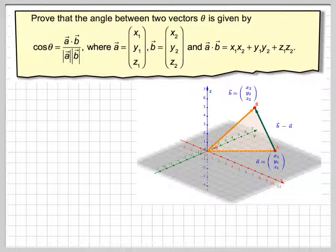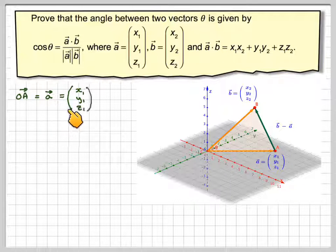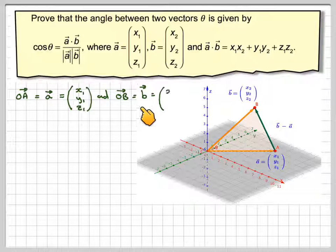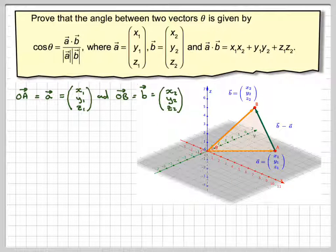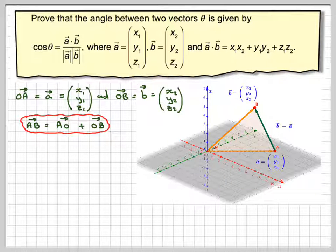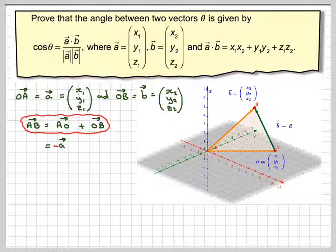So there's my diagram again. OA is equal to vector a: (x1, y1, z1), and OB is vector b: (x2, y2, z2). By the way, the proof is not required for standard level or high level, but it's good to know where it comes from. Vector AB is the same as going AO plus OB, which is minus a plus b, normally written as b minus a.